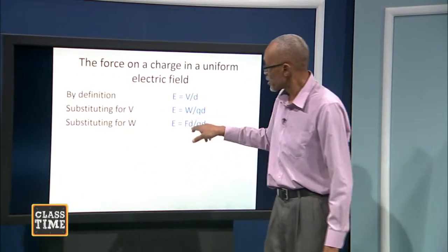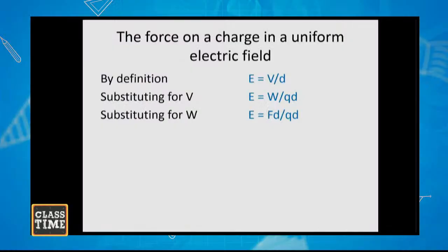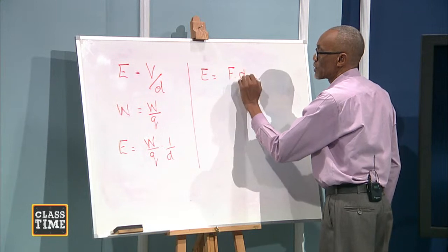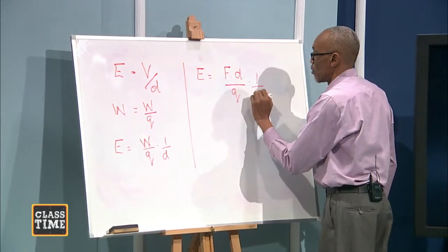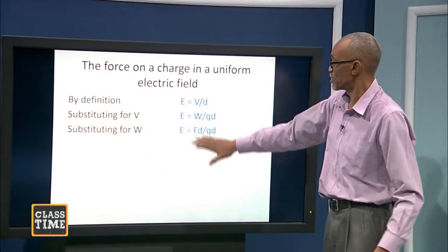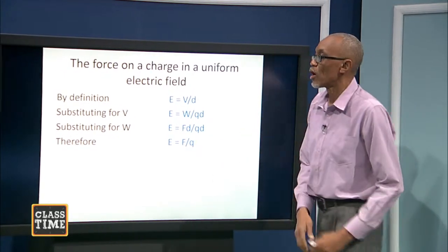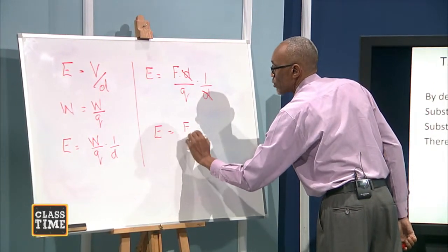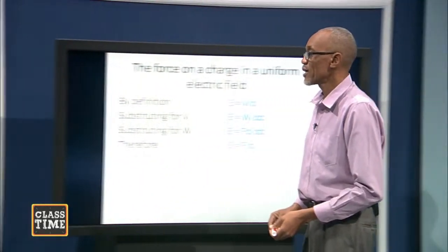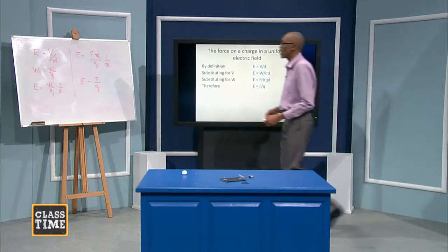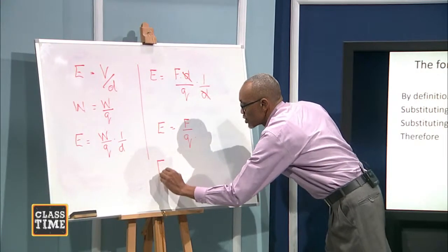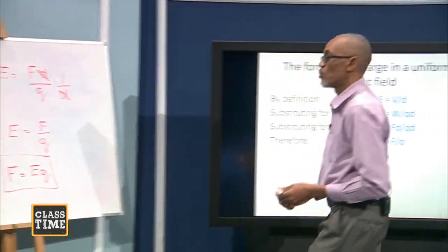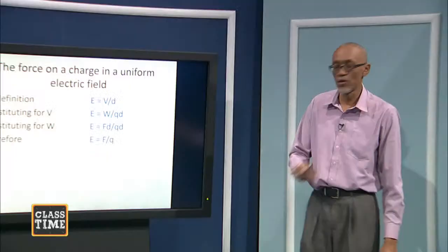Since work done is force times distance, we can substitute: E equals force times distance over charge times one over D. The D's cancel each other, and we get that electric field equals force per unit charge. So the force on the charge equals electric field times charge — F = EQ. So the electric field equals force times charge — those are our results.